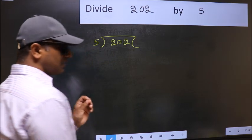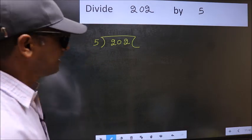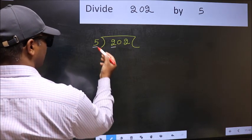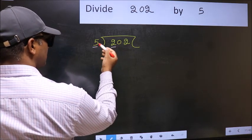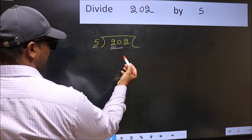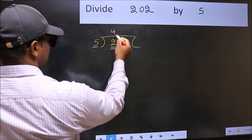This is your step 1. Next, here we have 2 and here 5. 2 is smaller than 5, so we should take 2 numbers, 20. When do we get 20 in 5 table? 5 fours 20.